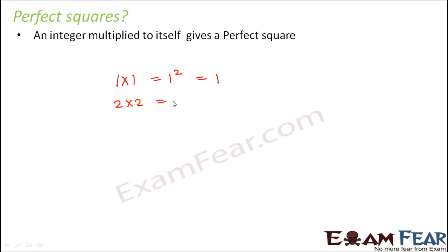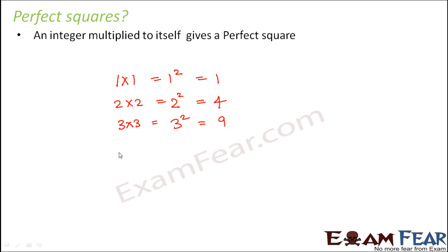2 multiplied to itself gives 2 squared, which has value 4, so 4 is a perfect square. 3 multiplied to itself gives 3 squared, that is 9, so 9 is also a perfect square.